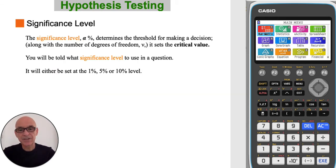The significance level determines the threshold for making a decision. In other words, it sets the critical value. You will be told what significance level to use in the question. It will either be set at 1, 5, or 10 percent.